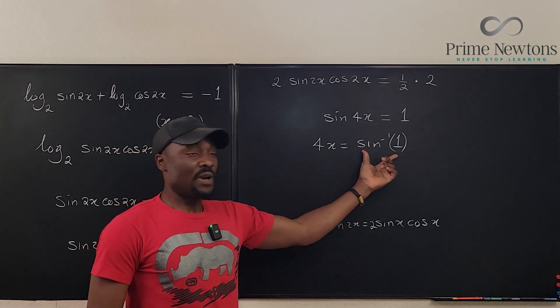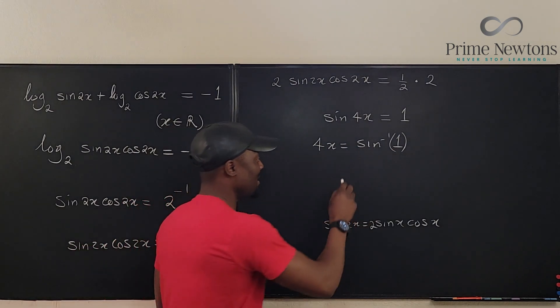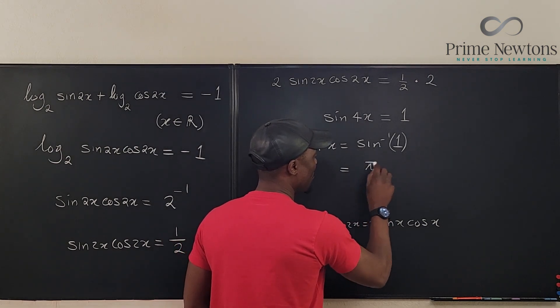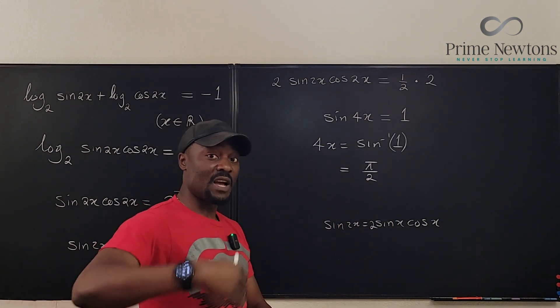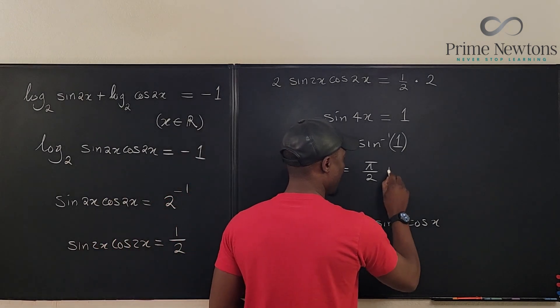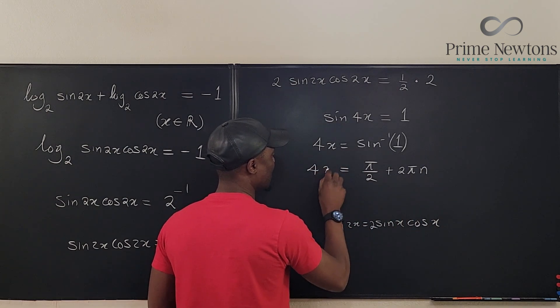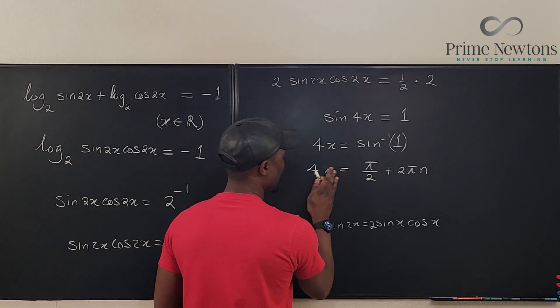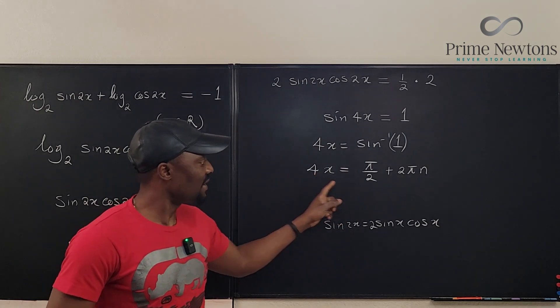This is π over 2 if you're in the first quadrant or every time you go around and you come back again, so plus 2π n. That is your 4x. So we can easily find what x is by dividing everything by 4.